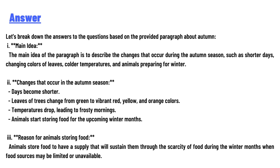Second, the changes that occur in the autumn season: days become shorter, leaves of trees change from green to vibrant red, yellow, and orange colors, temperatures drop leading to frosty mornings, and animals store food for the upcoming winter months.